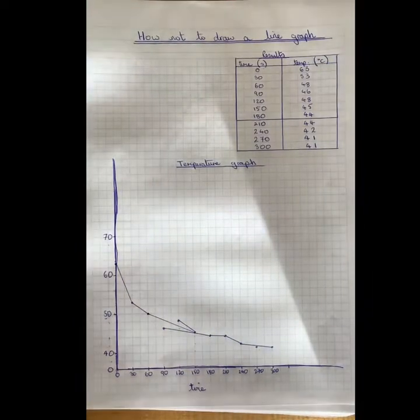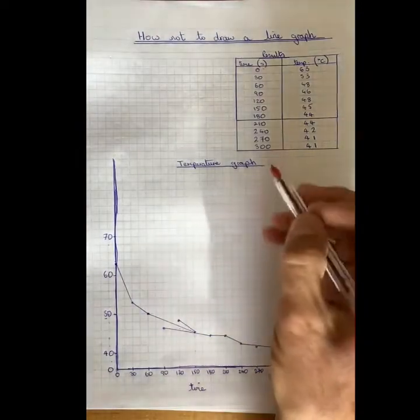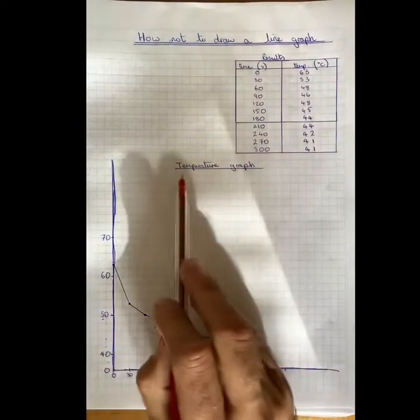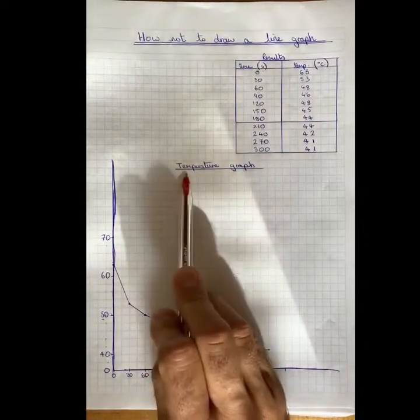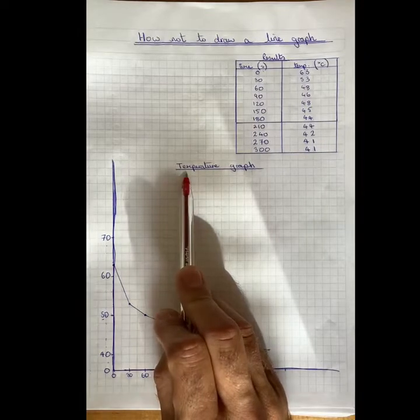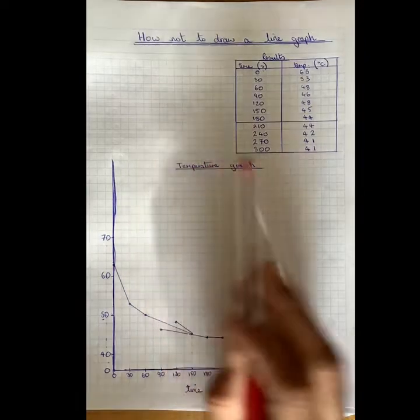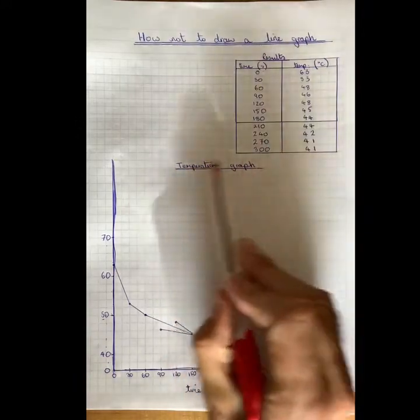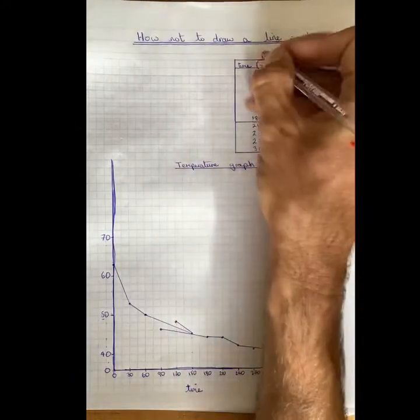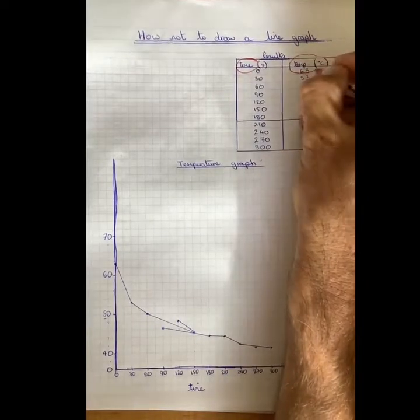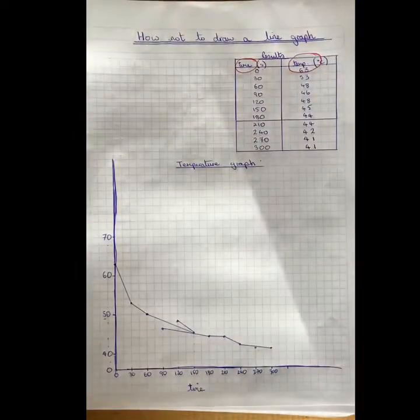Now the first thing I'm going to go to is the title here. Now this person has only written temperature graph. That for me doesn't tell me what the experiment was about and it doesn't tell me what the graph is showing. So when you write a title you want to mention your variables in there.